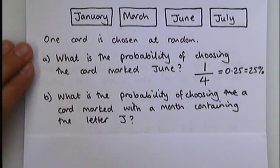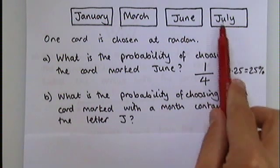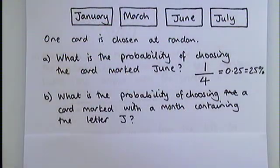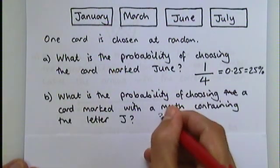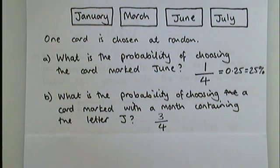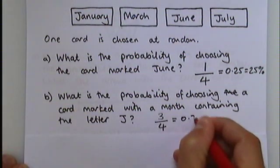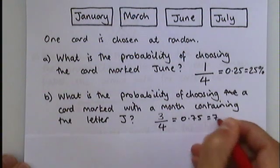The second question says, what is the probability of choosing a card marked with a month containing the letter J? To do this question, you need to look again at how many of the cards contain the letter J. There are one, two, three of them. Three cards out of four. That would be a perfectly acceptable answer. You could, again, turn that into a decimal or a percentage if you prefer.